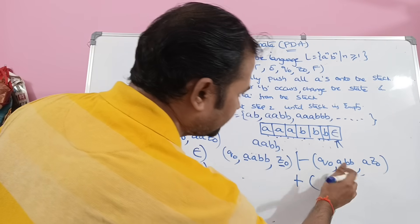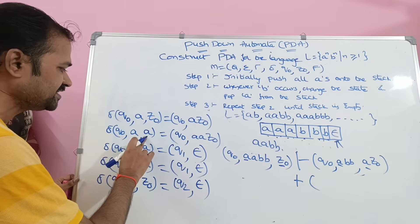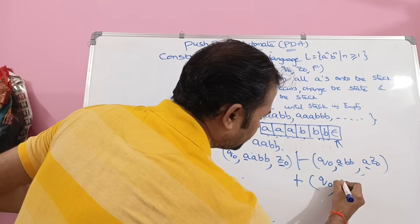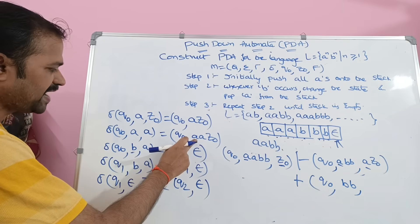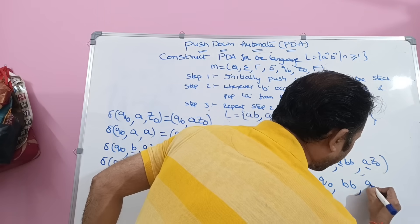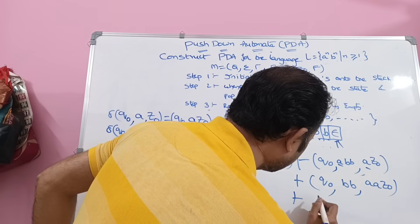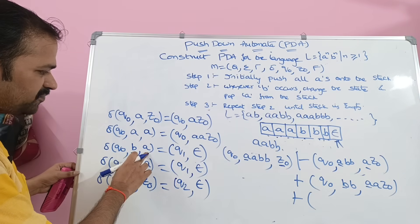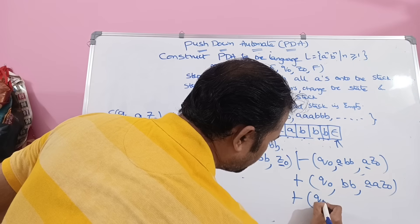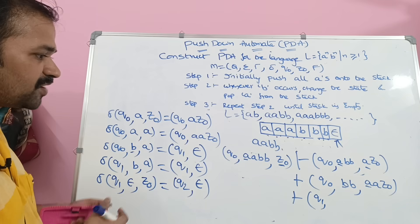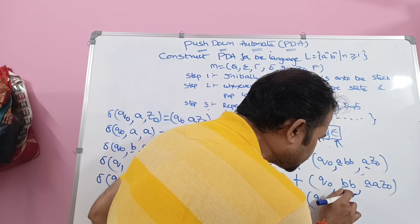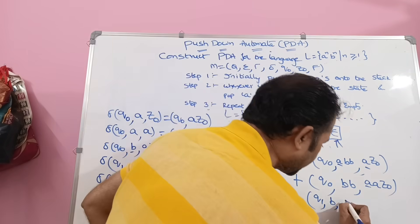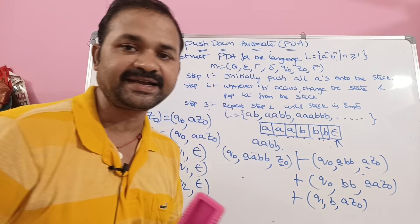State is q0, input symbol is A, top of stack is A. So we move to q0 and push A — stack becomes A A Z0. This A is processed, remaining string is BB. Next, input symbol is B, top of stack is A. We move to q1 and perform pop operation. This A is popped from the stack. Now the stack contains A Z0.